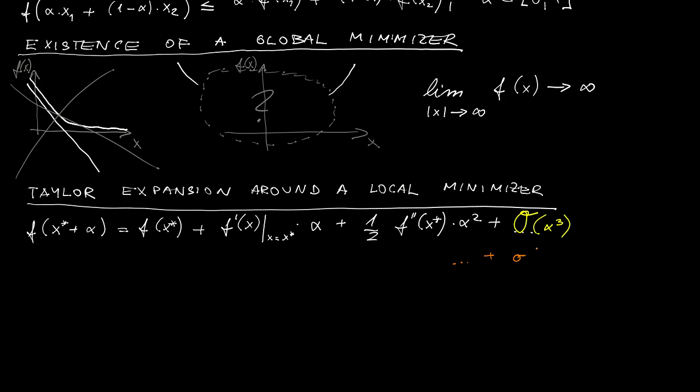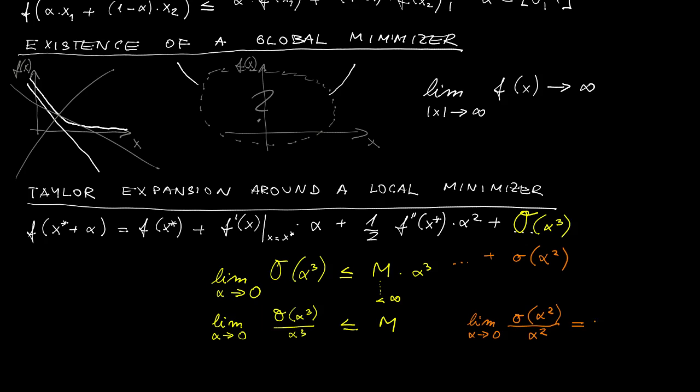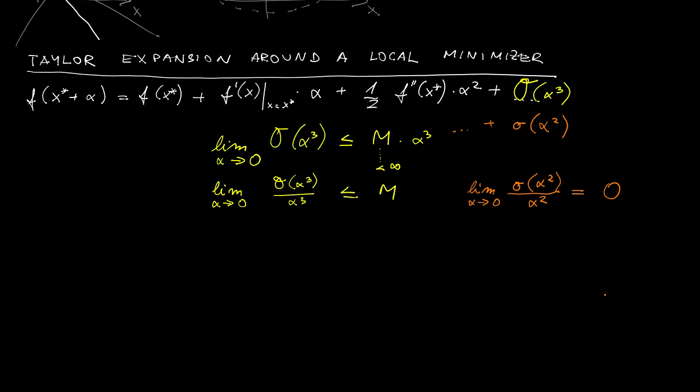We typically just say higher-order terms, but let me now be a little bit more explicit in what we mean. You can encounter one of two notations, either the so-called big O or little O. Let's first talk about big O notation. We say that the function is O(alpha^3) if for alpha going to 0, our function is upper bounded by a constant times alpha^3. Equivalently, we can write it like this, where M is some finite number. It simply means that the function goes to 0 no smaller than a cubic function. Alternatively, for little O, we are saying that the function goes to 0 faster than, in this case, a quadratic function. So two different concepts for describing the same situation.